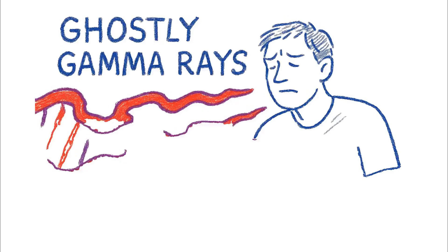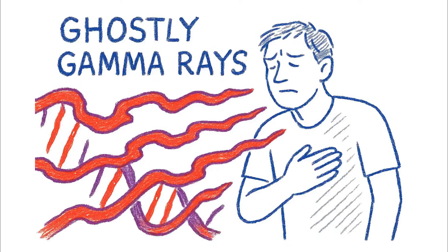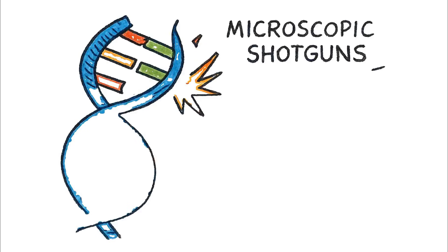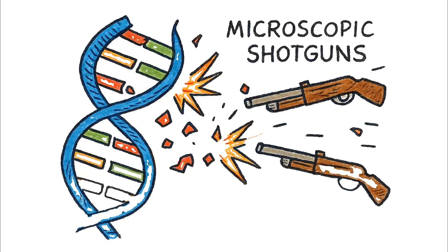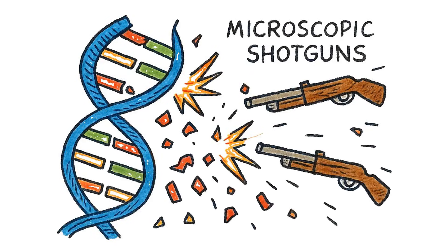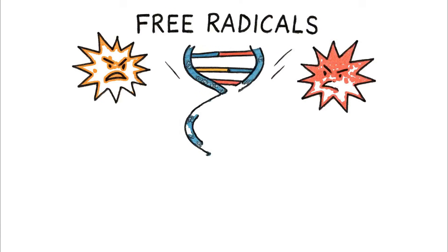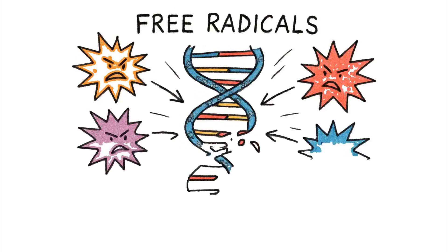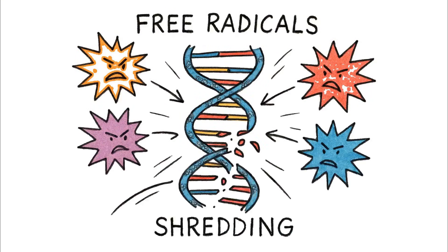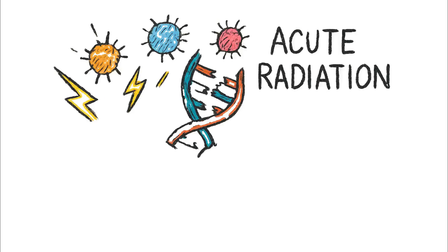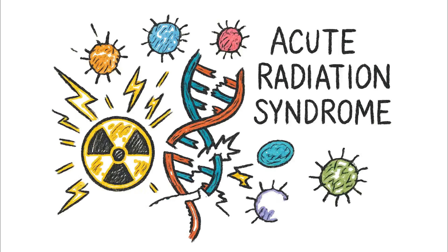Those ghostly gamma rays don't just pass through you. They act like microscopic shotguns, tearing apart your DNA helix and preventing your cells from ever replicating again. This bombardment creates a storm of highly reactive free radicals, shredding the delicate ladder of your genetic code.